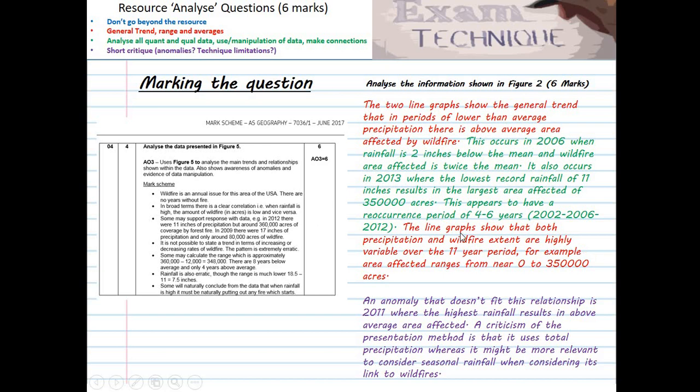So this section is meant to show me engaging with the two line graphs together and the average lines and understanding that there's a little bit more complexity in that relationship using specific values to make my point. Back to the general trend. The line graphs show that both precipitation and wildfire extent are highly variable over the 11 year period. For example, the area affected ranges from near zero to 350,000 acres. This is an opportunity of me being able to show the examiner that I understand the use of basic statistics in understanding ranges of data and variability of data. Onto the purple section. An anomaly. An anomaly that doesn't fit this relationship is 2011 where the highest rainfall recorded results in above average area affected. A criticism of the presentation method is that it uses total precipitation whereas it might be more relevant to consider seasonal rainfall when considering its link to wildfires.